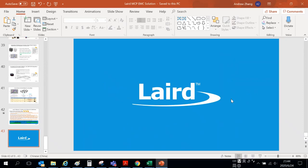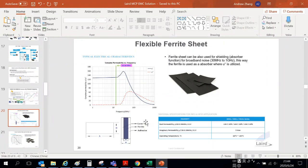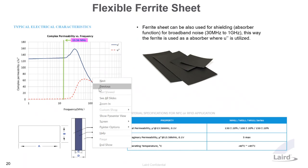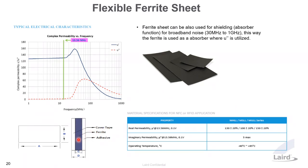Q&A: An attendee asks what the minimum thickness of a ferrite sheet Laird can offer. In terms of thickness, the pure ferrite layer can be as thin as 0.05 mm. All together with the sandwich construction, Laird offers a total thickness as thin as 0.08 to 0.09 mm.